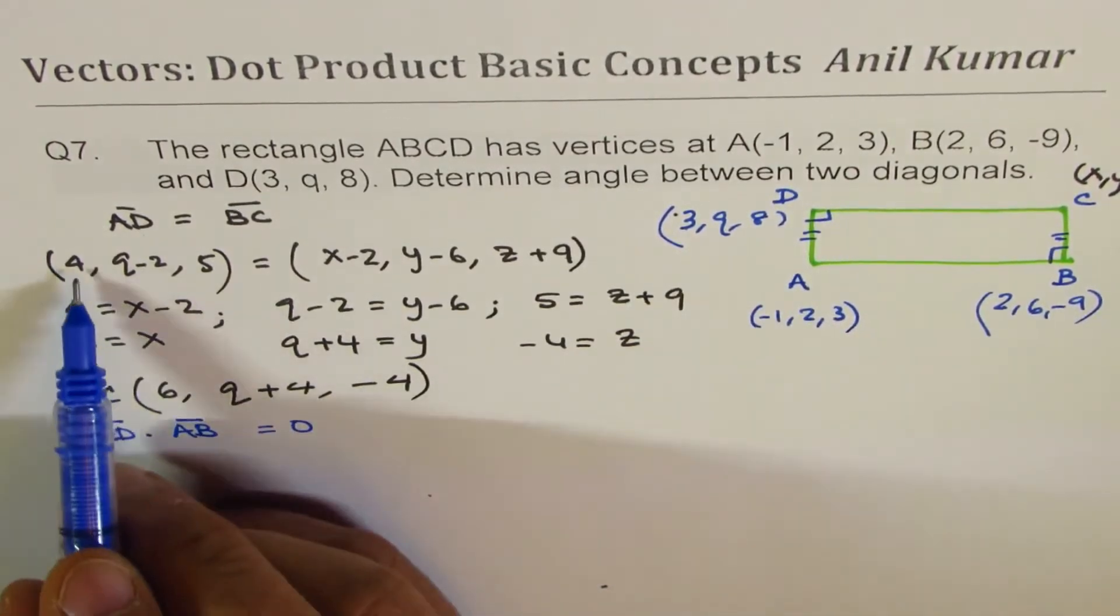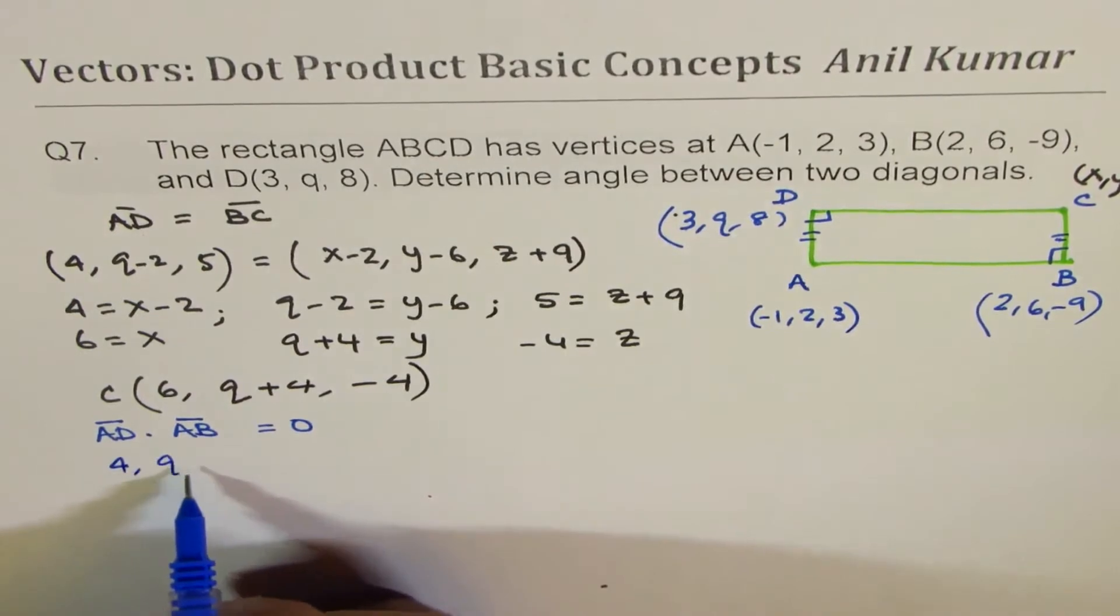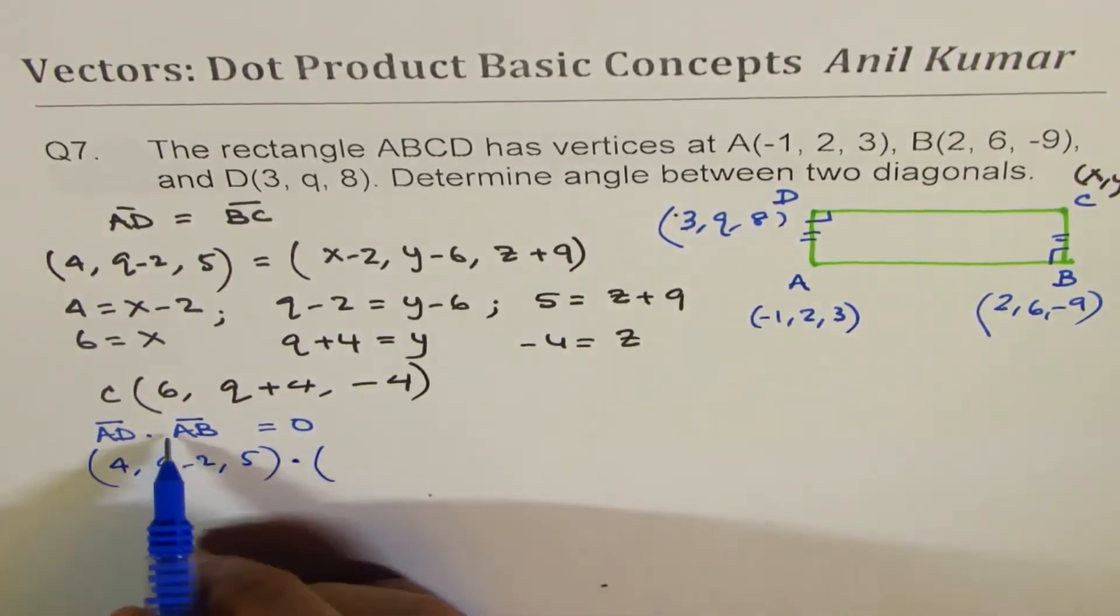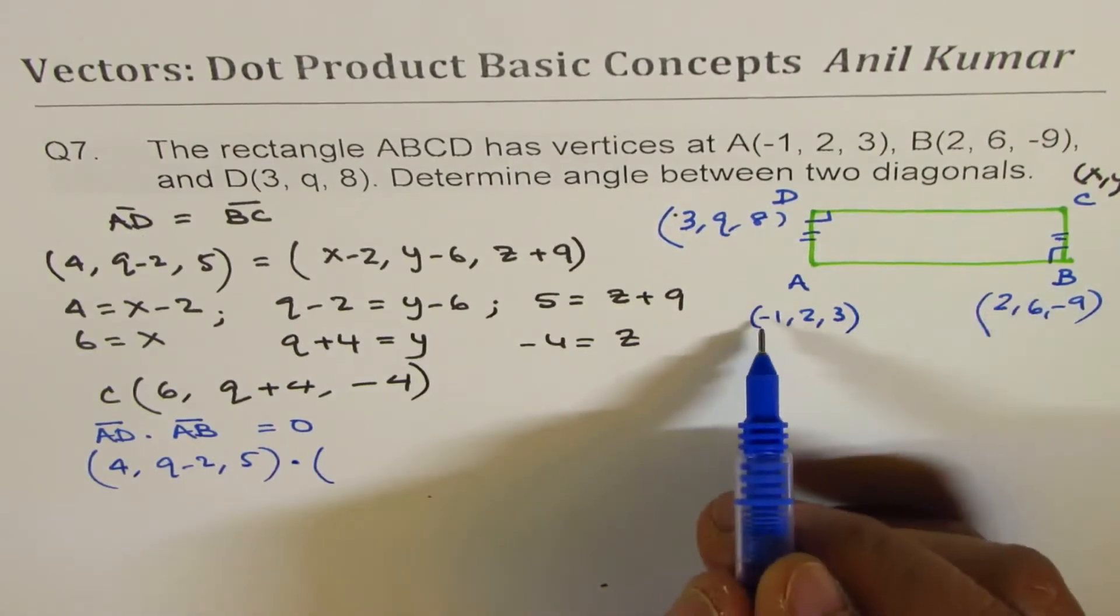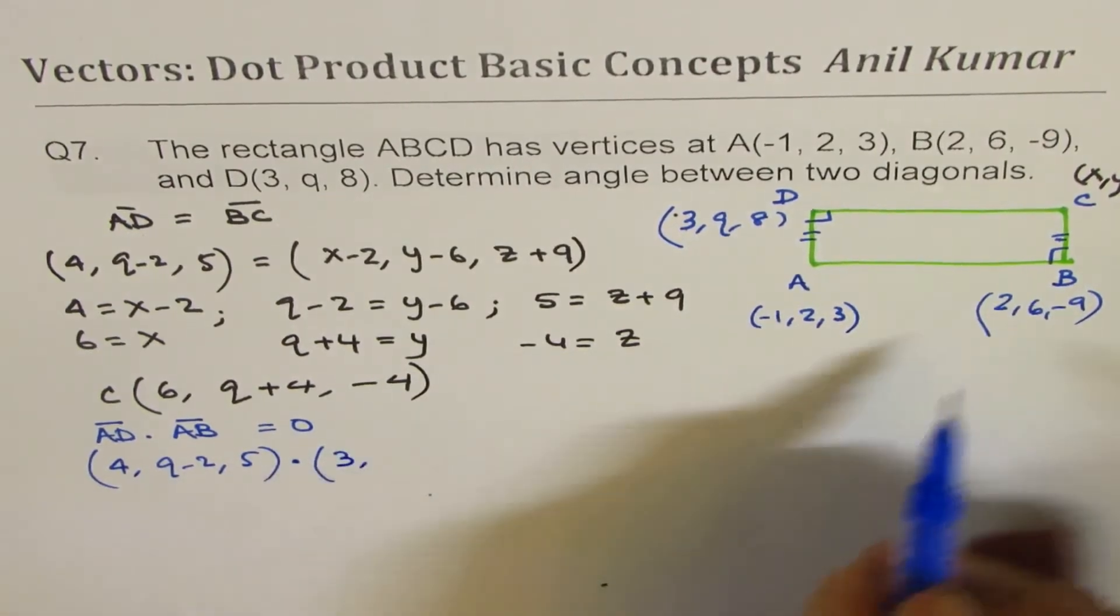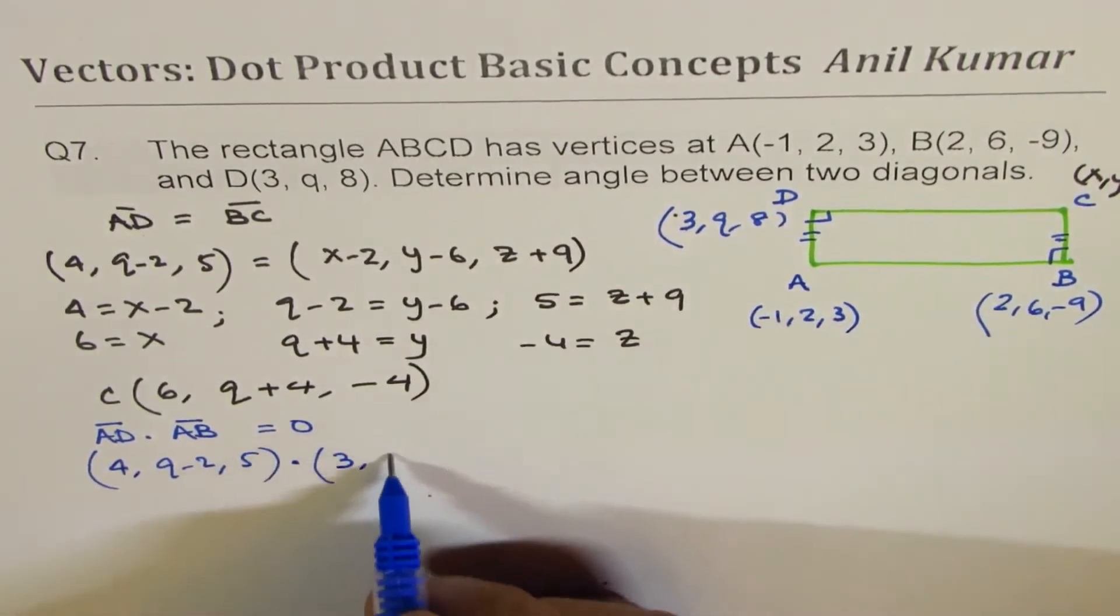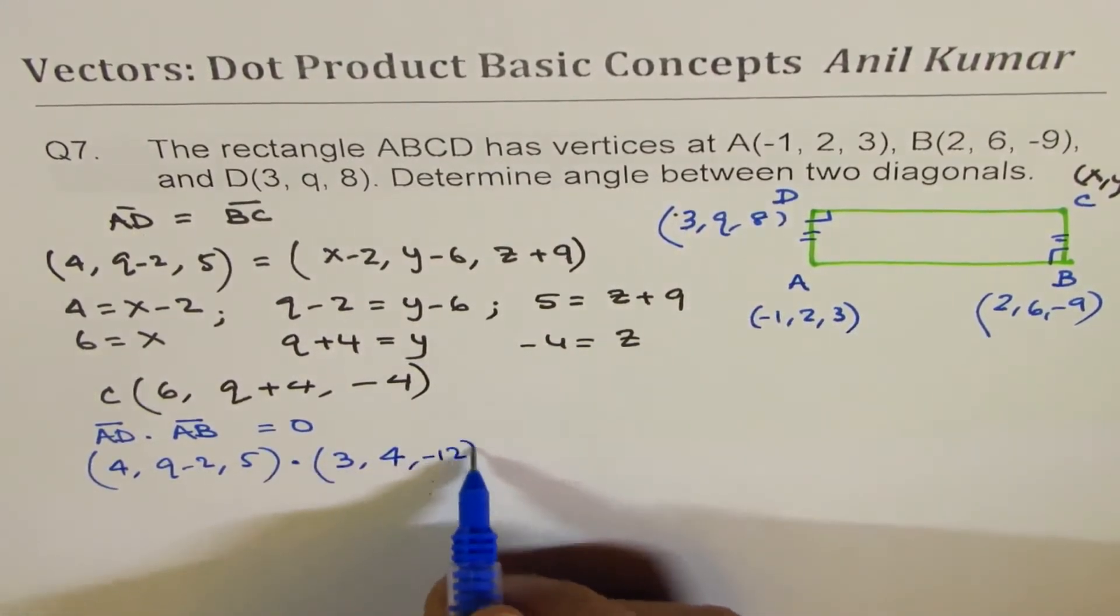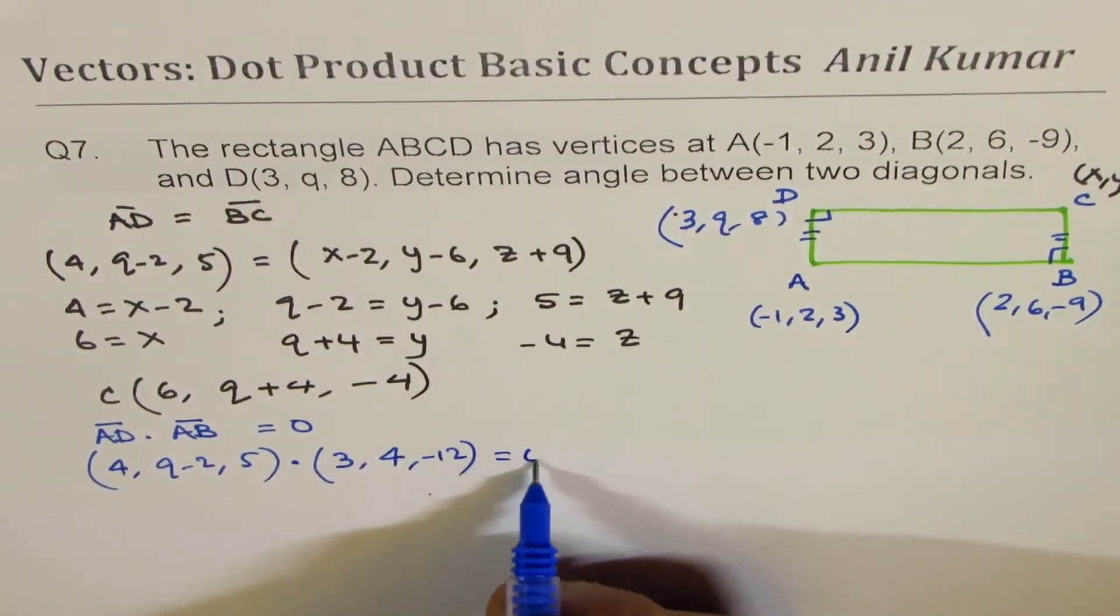So AD is (4, Q-2, 5) dot AB is (3, 4, -12), and that should be equal to 0.